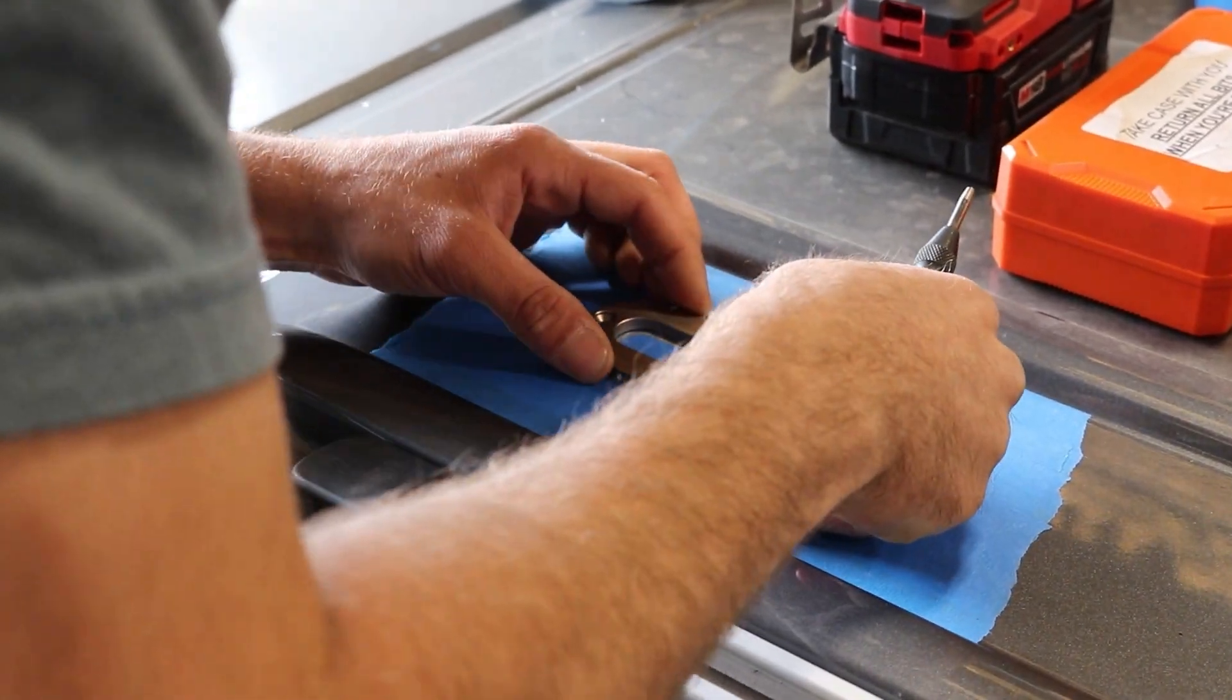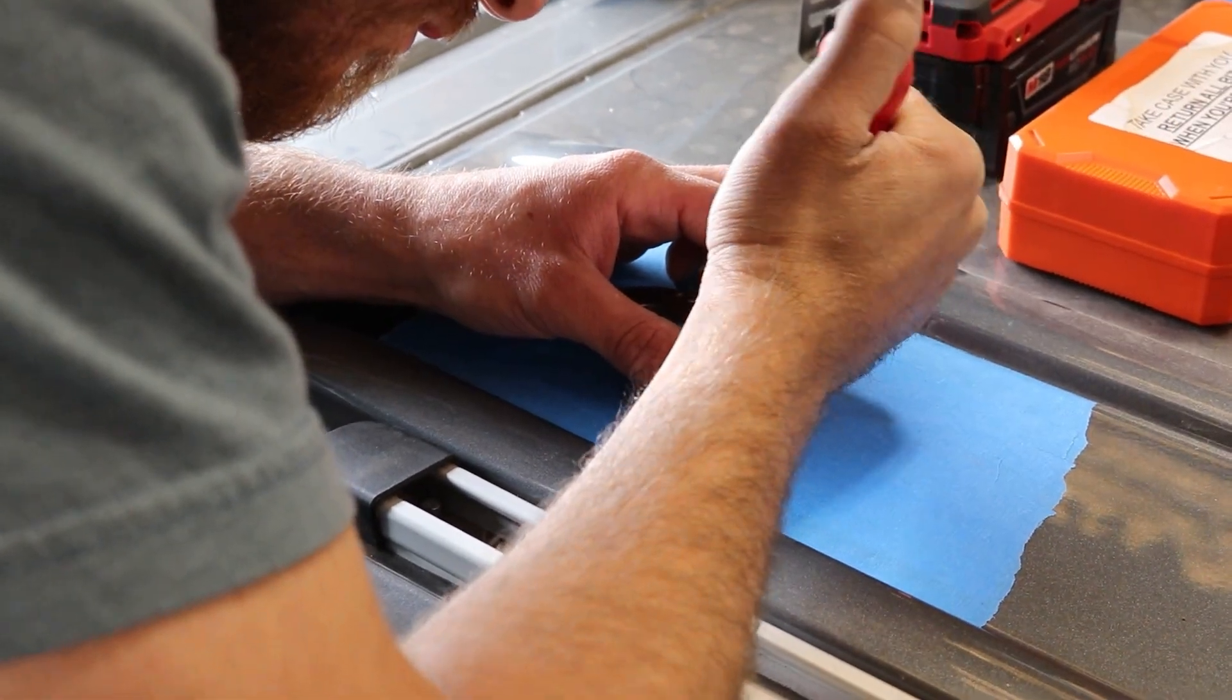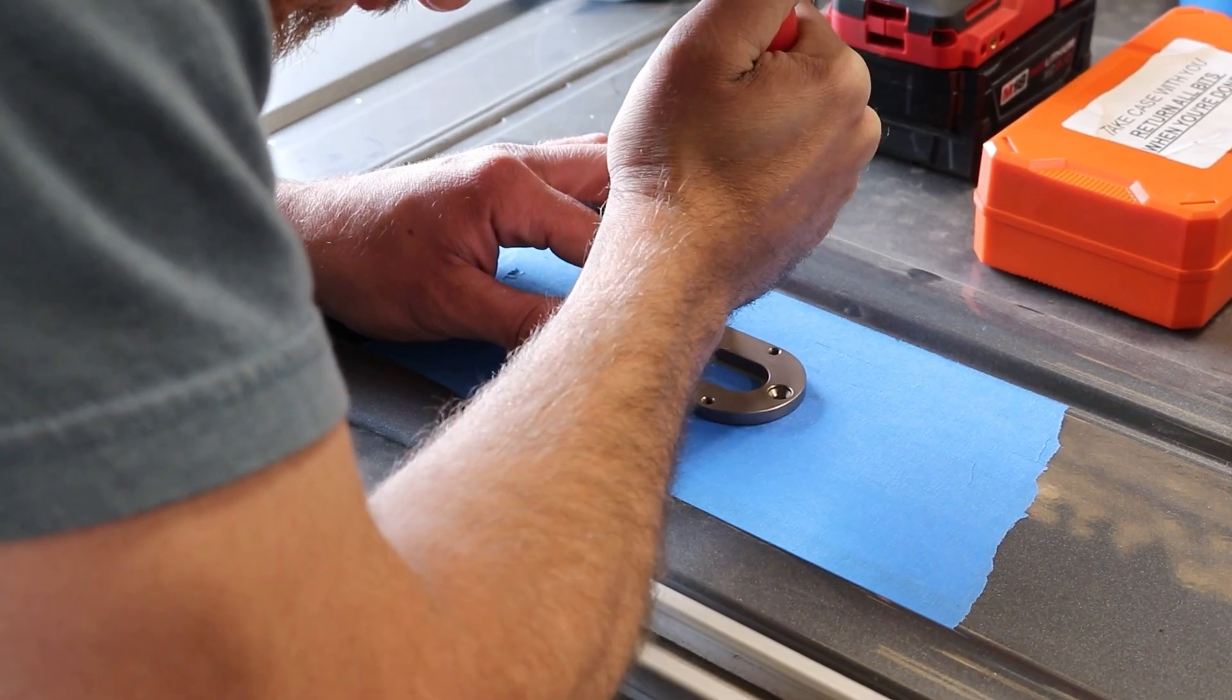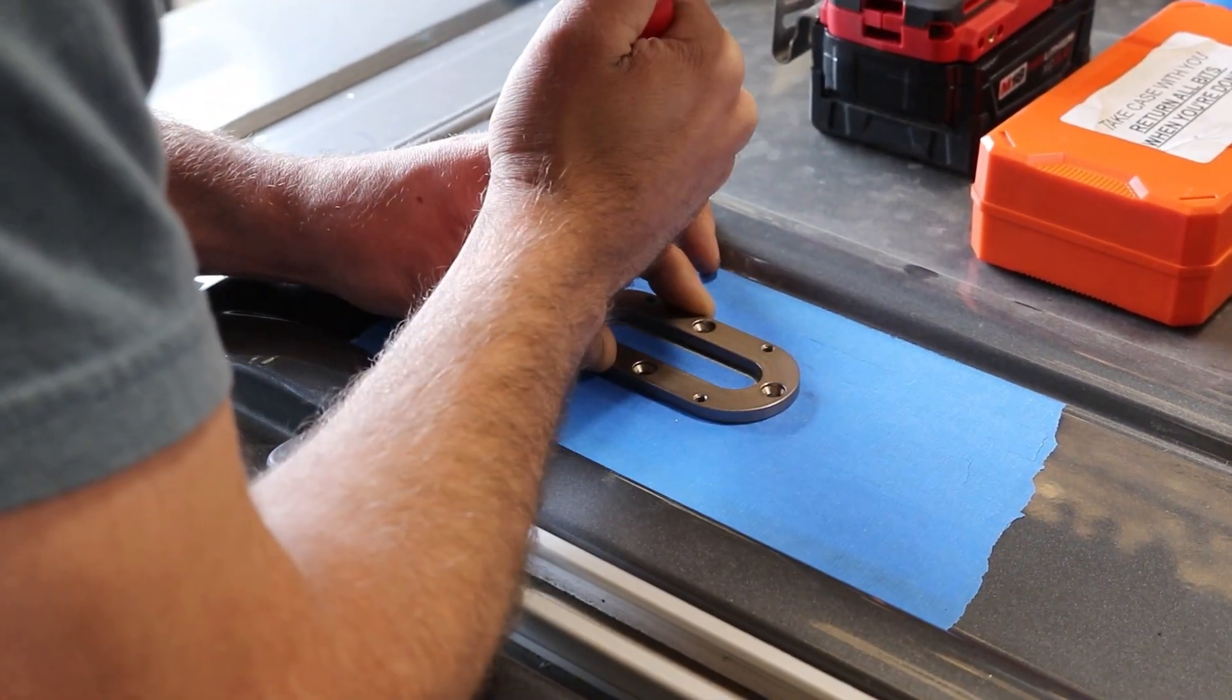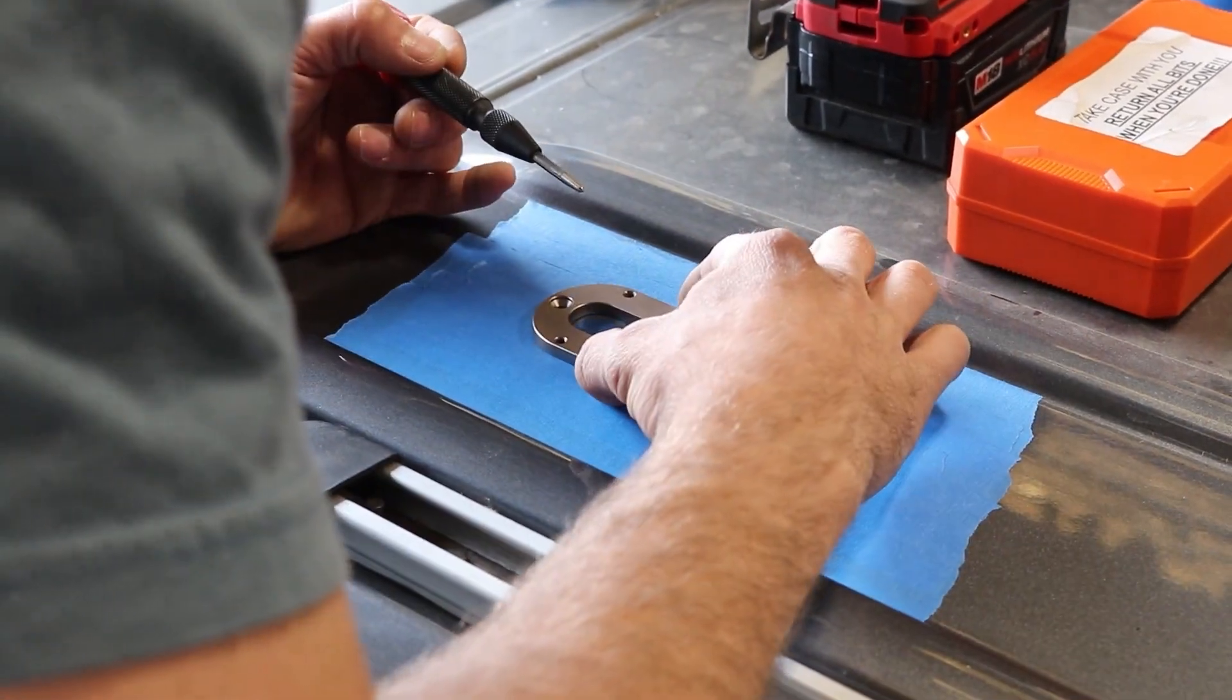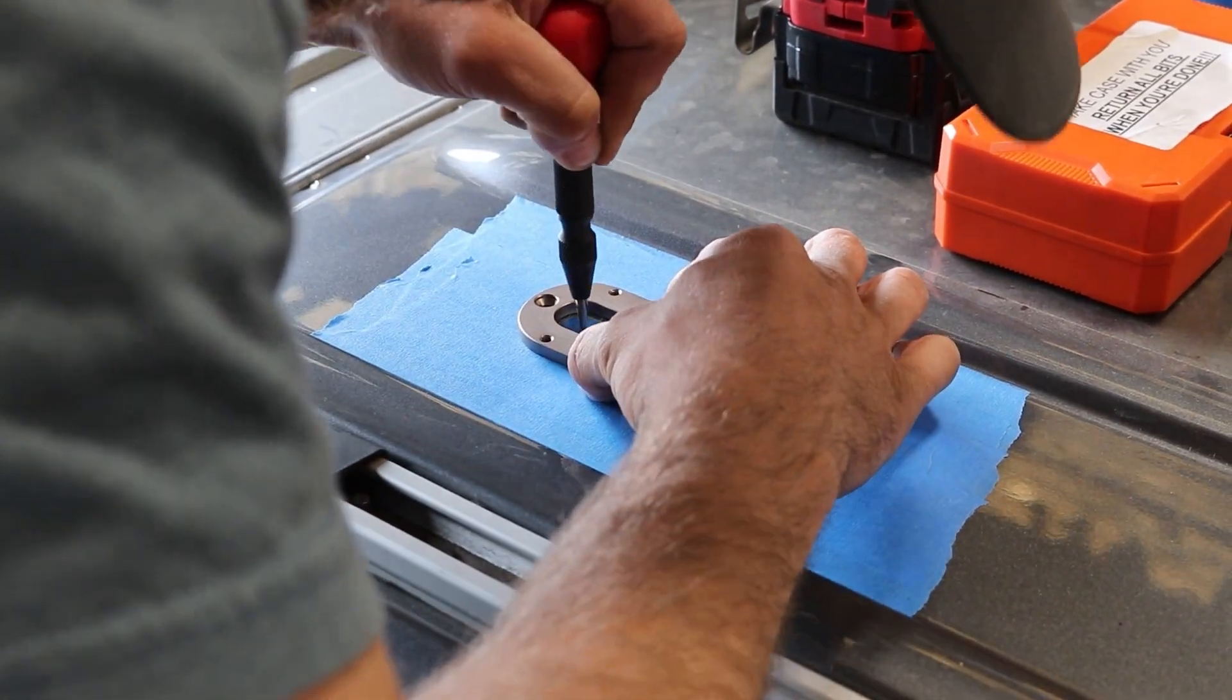Now we're taking our punch to mark the holes. The punch is nice because it keeps the drill bit from drifting, and he's marking all of the holes that he plans to start with the drill bit, including the ends of the large center cutout that he's gonna be using the hole saw for.